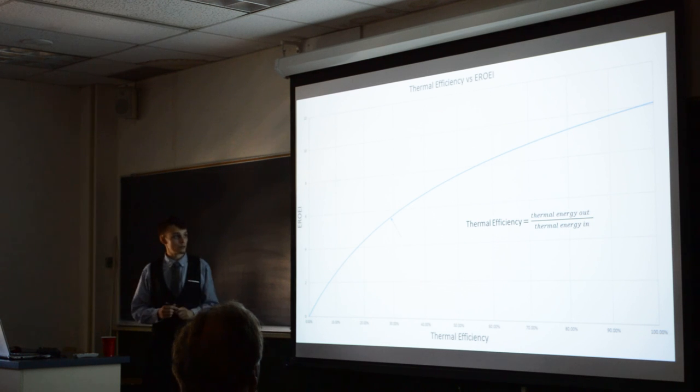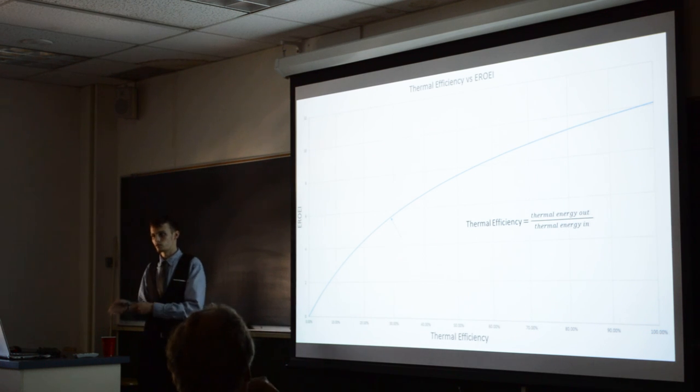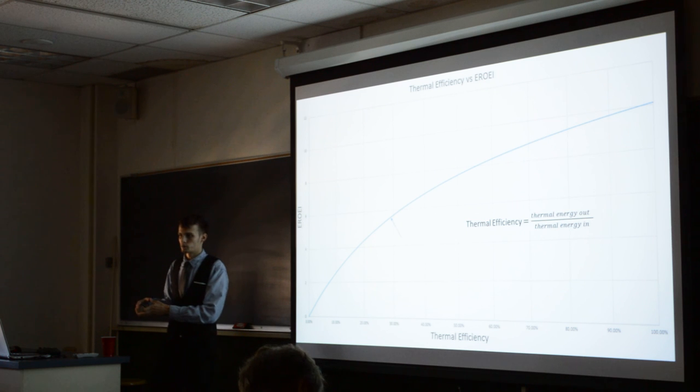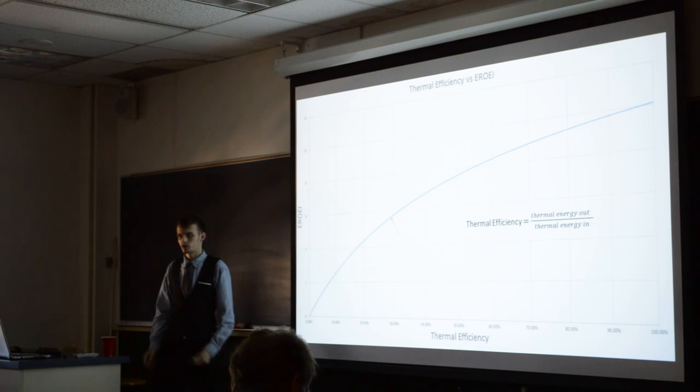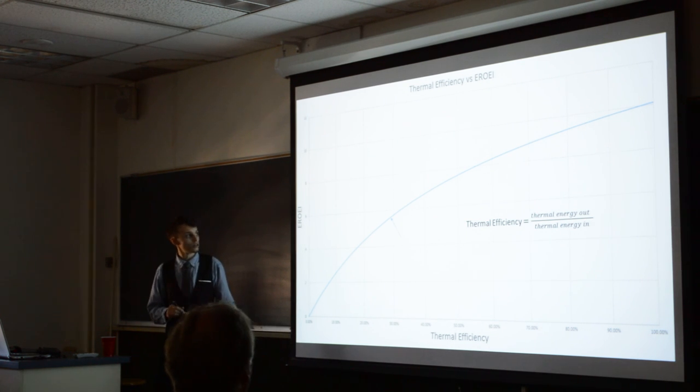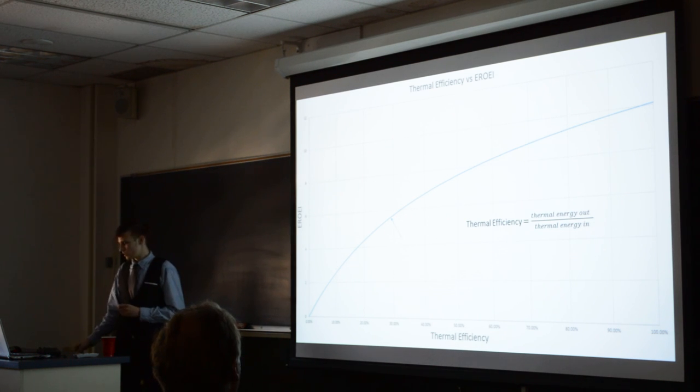The second one is the thermal efficiency, which is tying your thermal energy out and thermal energy in. So say you burn some coal, it has a specific heat, but we're only capable of capturing so much of that heat and making it energy. Whereas right here is that 30% we could definitely do better, but there's a lot of mechanical issues like friction and material science that prevent this.